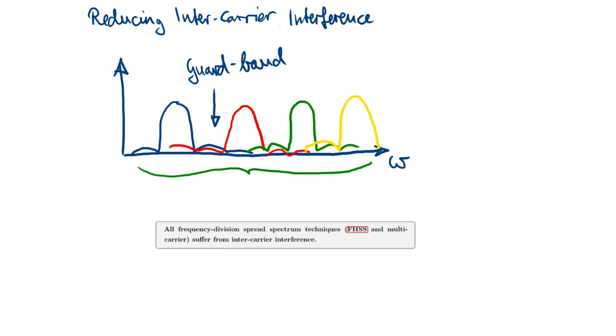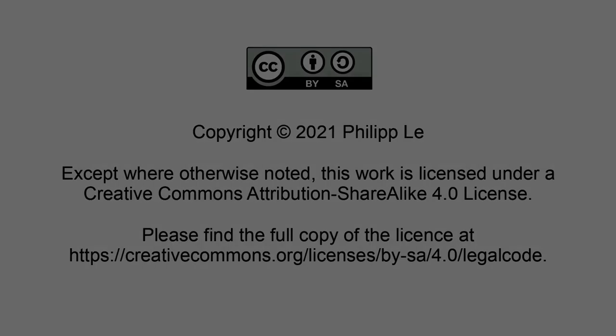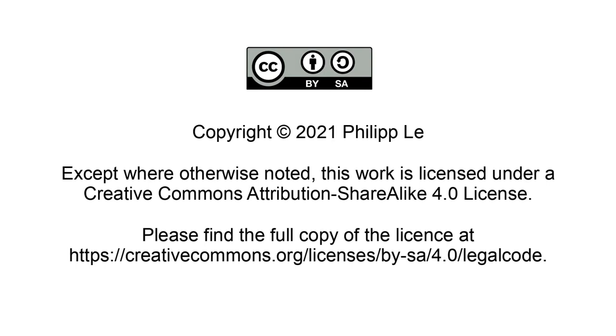The last important point is you still have inter-symbol interference. If you, for example, use a time-hopping spread spectrum technique, then you as well need to add guard intervals in the time domain to reduce the symbol interference. You have these kind of disturbances anyway, and you have to deal with them.